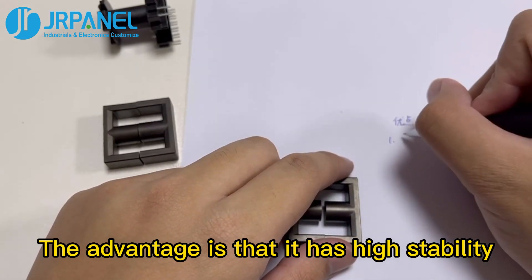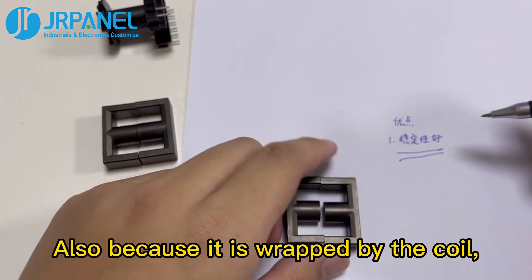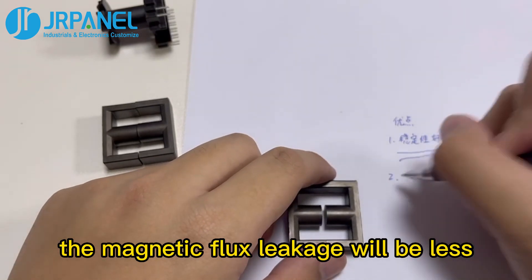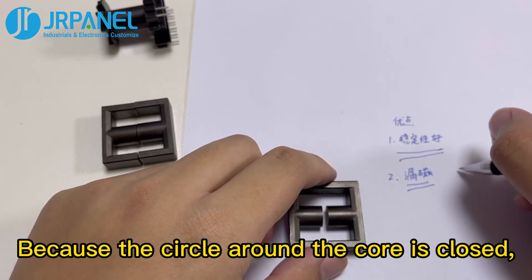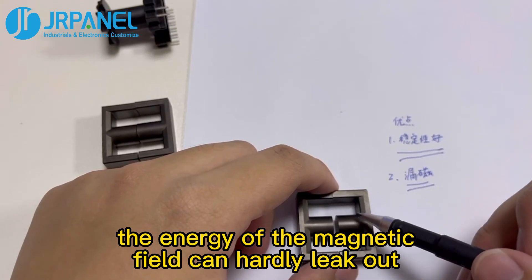The advantage is that it has high stability and is not greatly affected by cold and heat. Also, because it is wrapped by the coil, the magnetic flux leakage will be less. Because the circle around the core is closed, the energy of the magnetic field can hardly leak out.